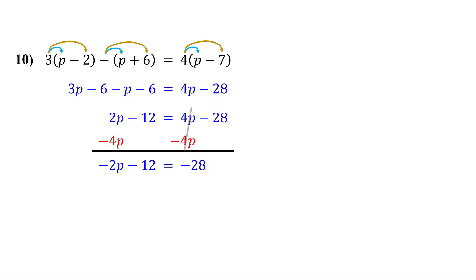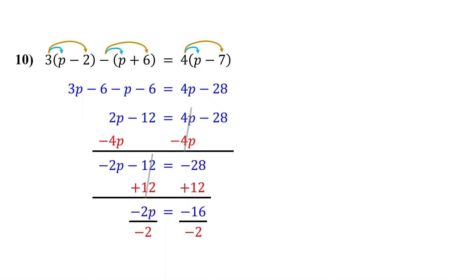Now it is just a two-step equation. So next, isolate negative 2p by adding 12 to both sides. These cancel out on the left, leaving negative 2p. Negative 28 plus 12 gives us negative 16. Finally, divide both sides by negative 2 to get p by itself. The negative 2s cancel out, leaving p. Negative 16 divided by negative 2 is positive 8. So the solution is p equals 8.